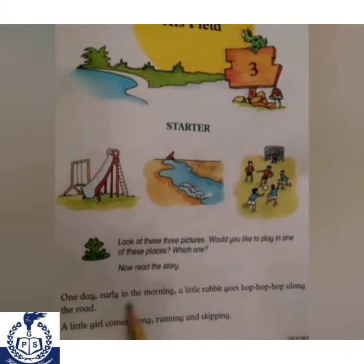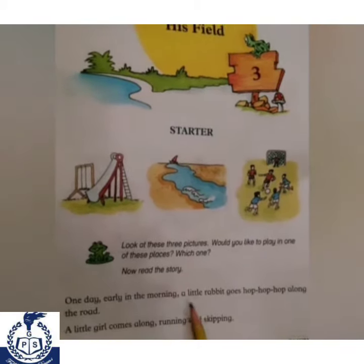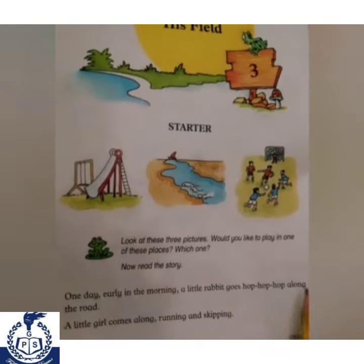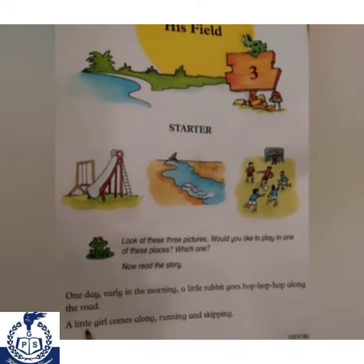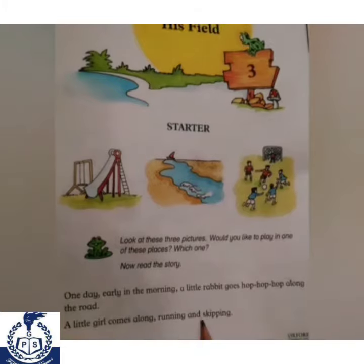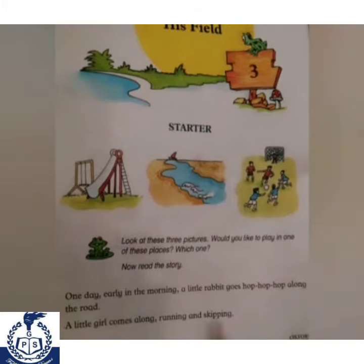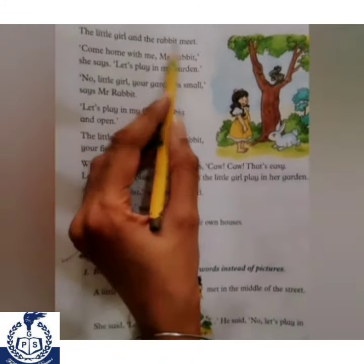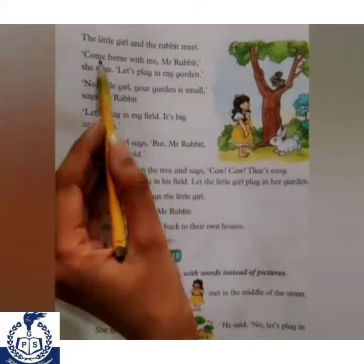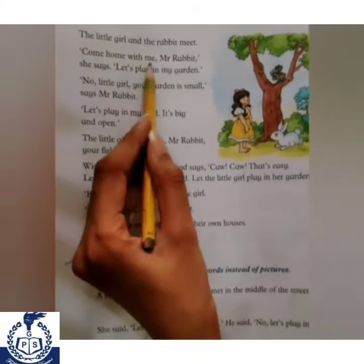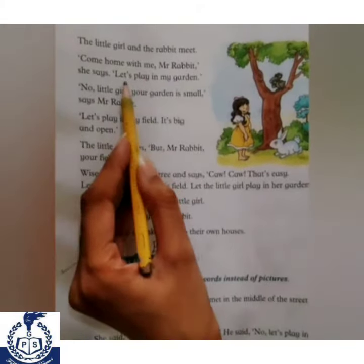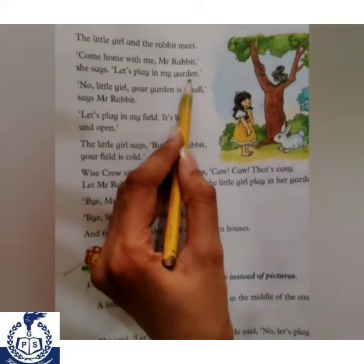One day, early in the morning, a little rabbit goes hop, hop, hop along the road. A little girl comes along running and skipping. The little girl and the rabbit meet. 'Come home with me, Mr. Rabbit,' she says. 'Let's play in my garden.'